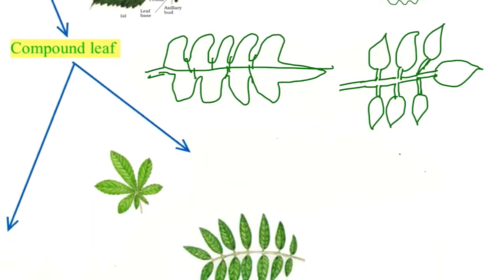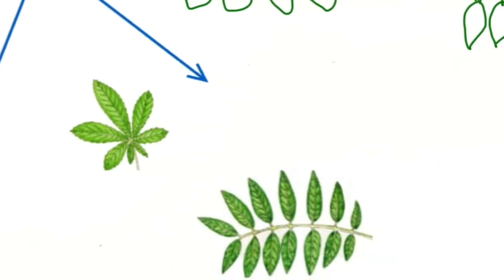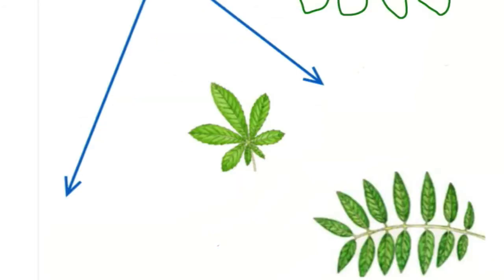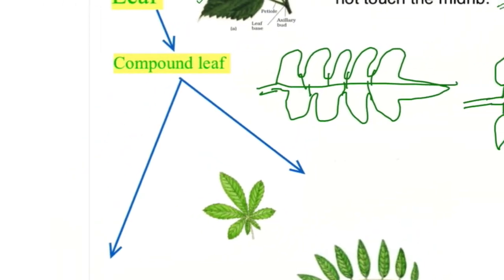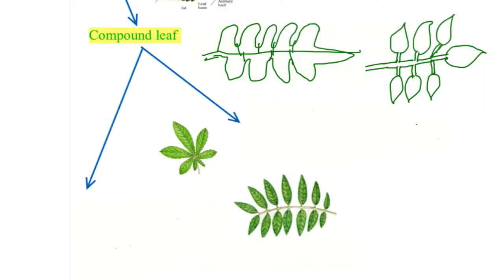There are two types of compound leaves. In the first type, all the leaflets are arranged at the tip of the petiole at a common point. In the second type, leaflets are arranged along a common axis called the rachis. There are two types of compound leaves: palmately compound leaf and pinnately compound leaf.